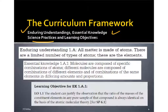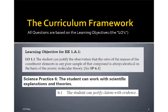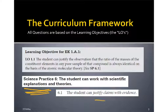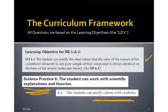Those science practices are linked up with essential knowledge, and then you come up with a learning objective. For example, for your essential knowledge, if it's linked up with the science practice — students can work with scientific explanations and theories, and the sub-idea is to justify claims with evidence — then you can come up with a learning objective: the student can justify the observation that the ratio of the masses of constituent elements in any pure sample of that compound is always identical, based on the atomic molecular theory. That is the law of definite composition.